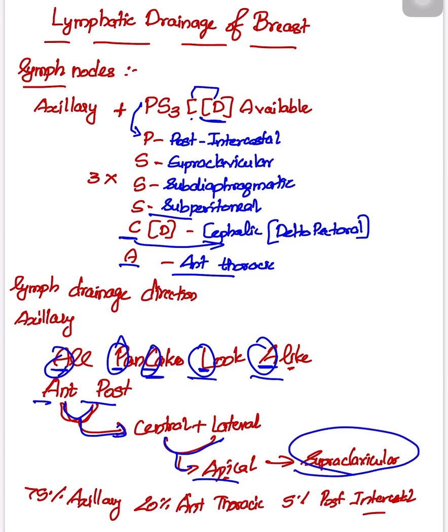the direction of drainage. Now, the contribution: how much lymph drains into which group? 75% to axillary as it's the chief lymph node, 20% to anterior thoracic, and 5% to posterior intercostal. This is the mnemonic for lymphatic drainage of the breast. Thank you.